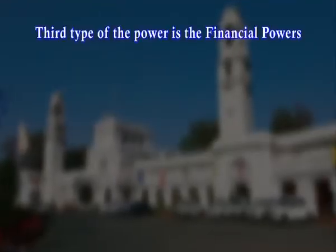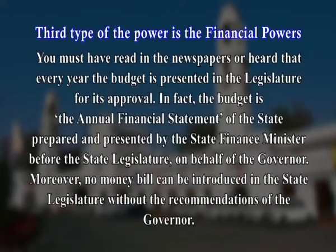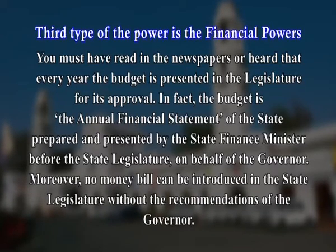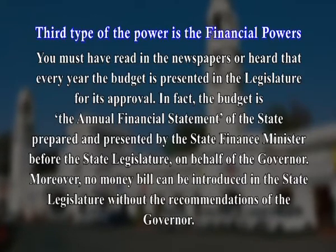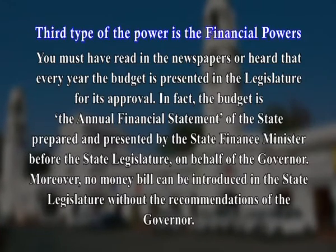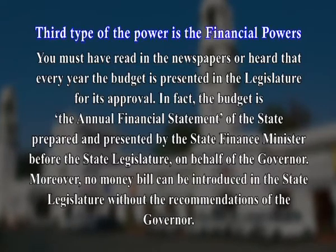The third type of power is the financial power. Every year the budget is presented in the legislature for its approval. The budget is the annual financial statement of the state, prepared and presented by the state finance minister before the state legislature on behalf of the governor. Moreover, no money bill can be introduced in the state legislature without the recommendation of the governor. He or she also has control over the state contingency funds.